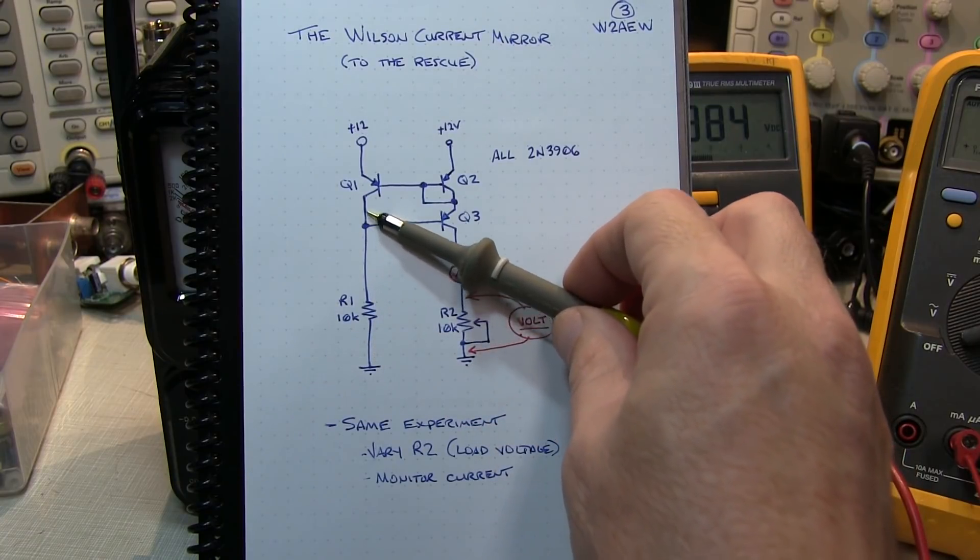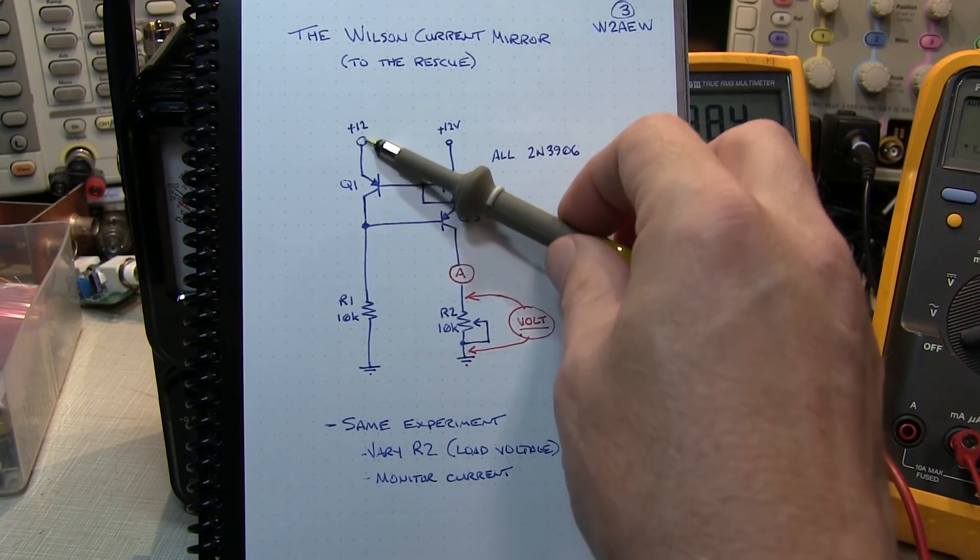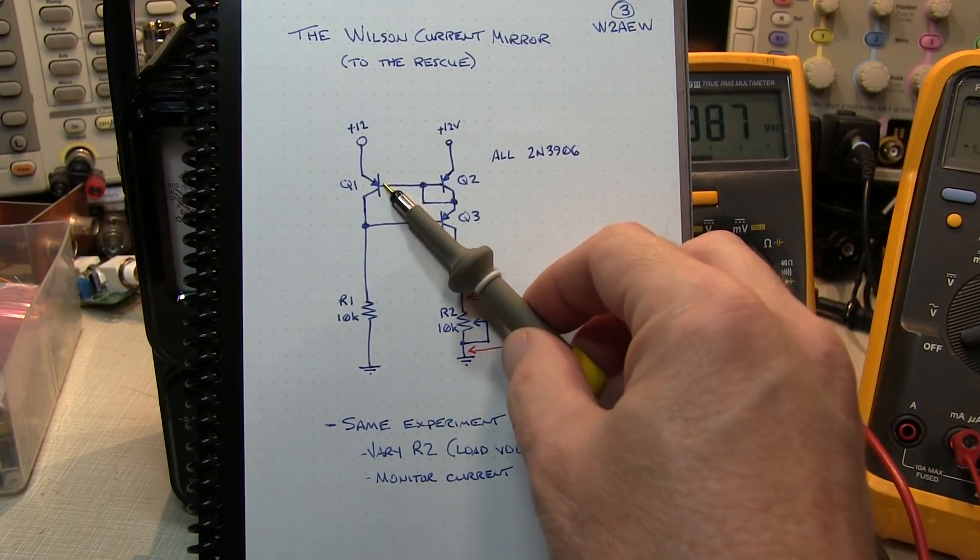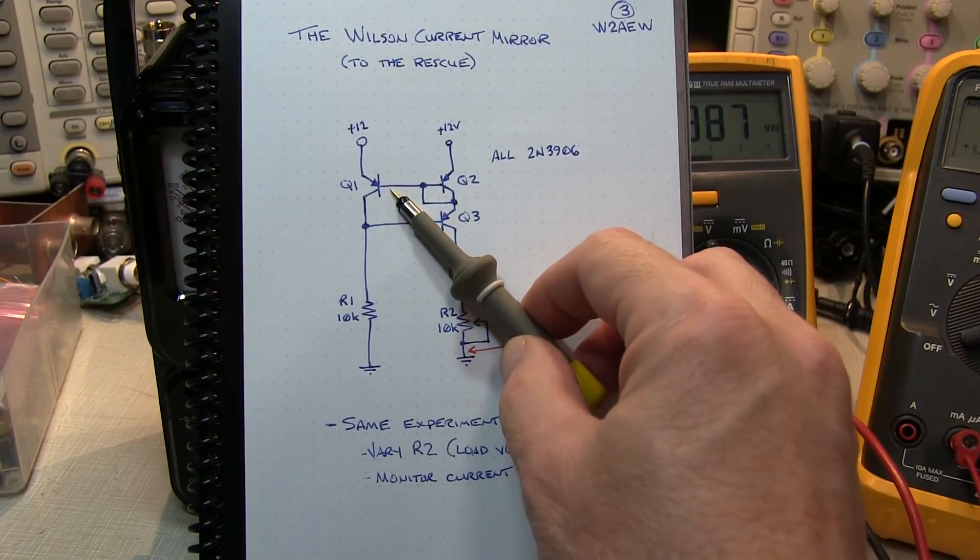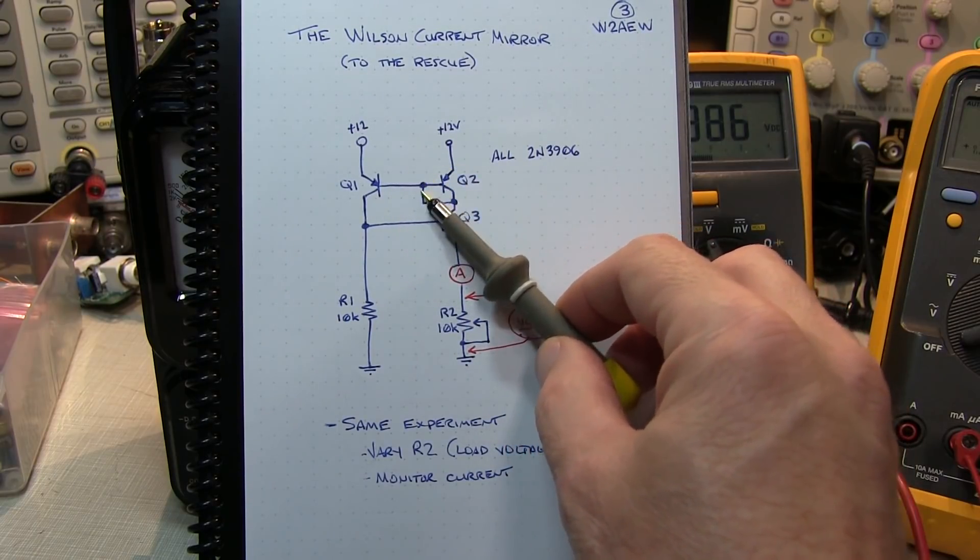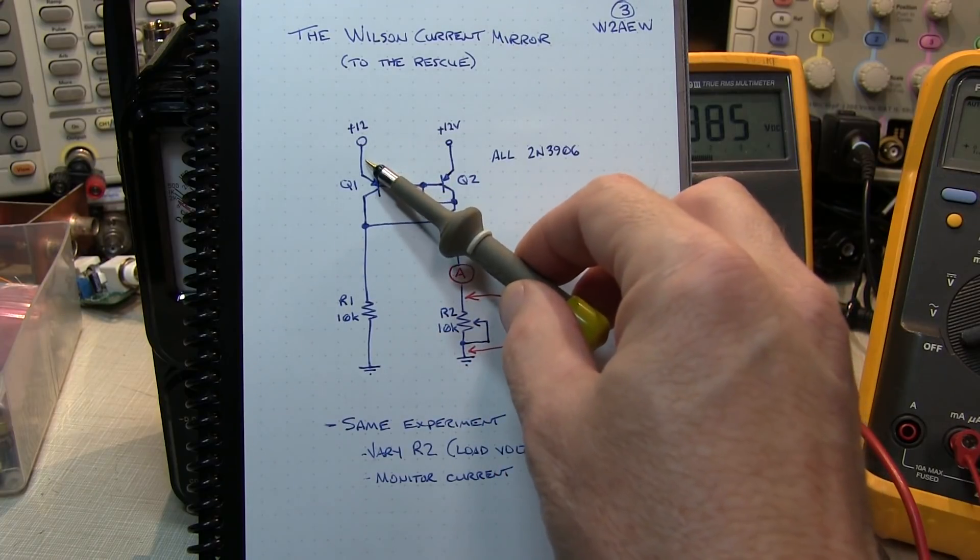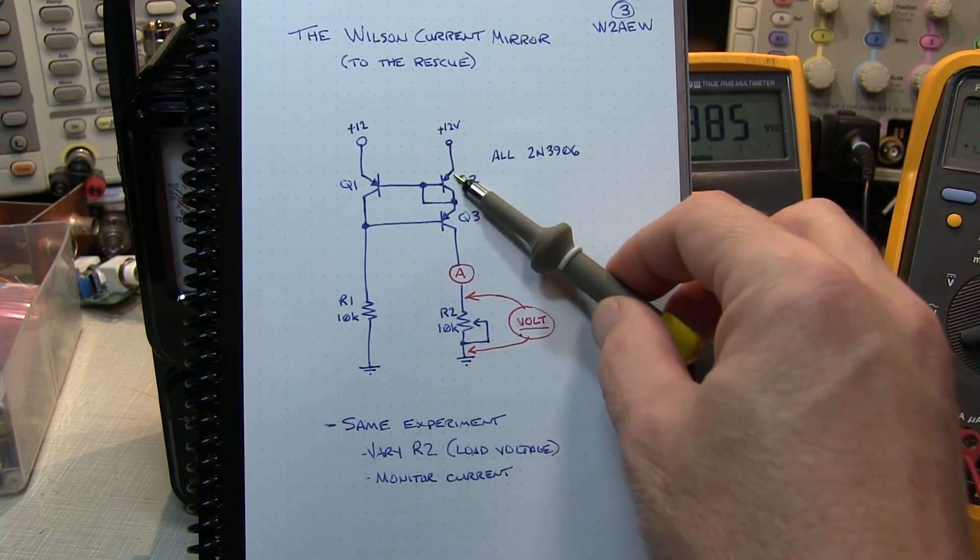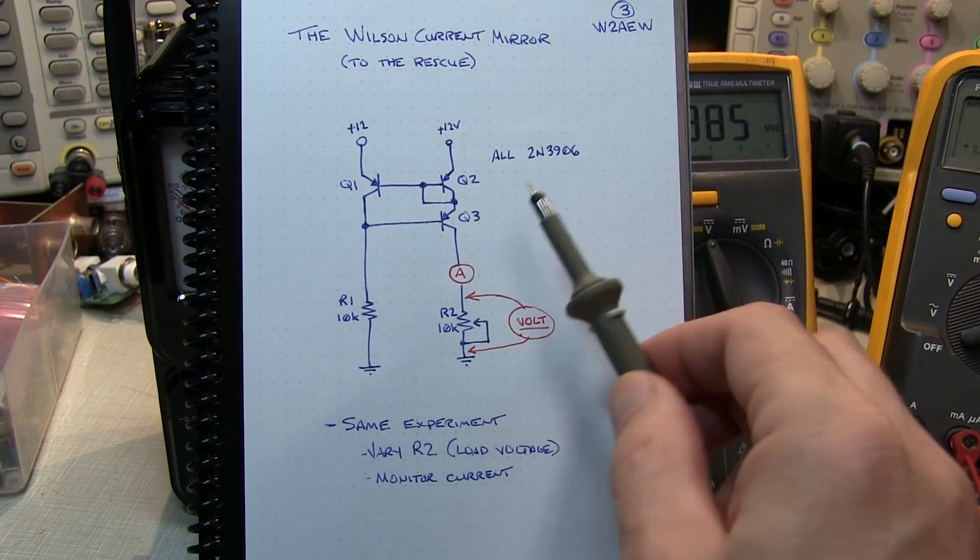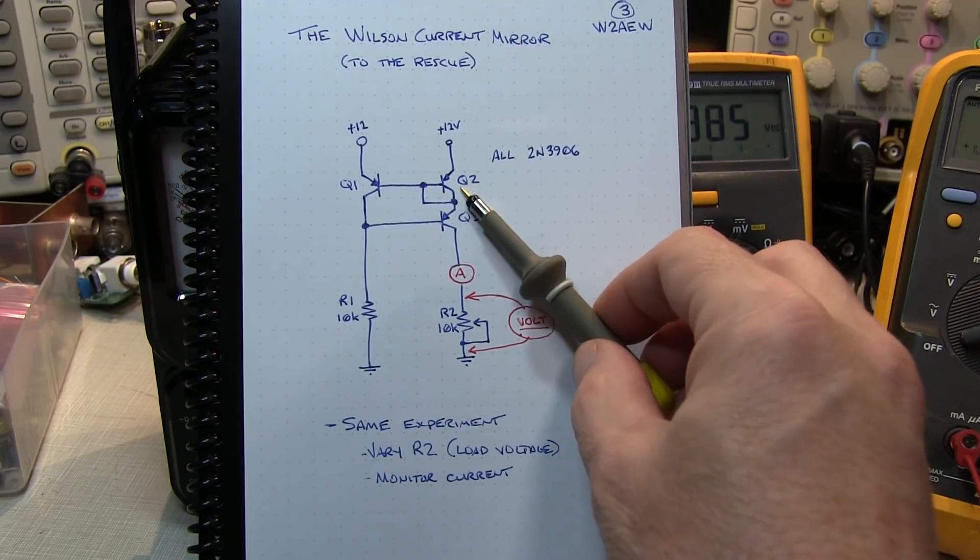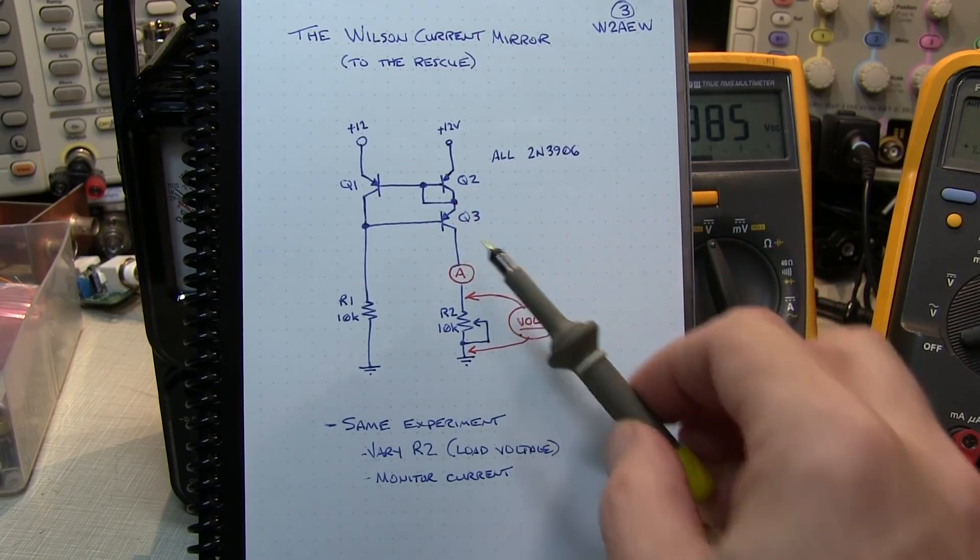With that constant current in Q1, setting up a base emitter voltage on Q1, that base emitter voltage is going to be the same on Q2 because they're connected to the same points. So now I'm going to have the same collector current flowing in Q2 as I am in Q1. If we ignore the base currents, that same current going through Q2 is also going to flow through Q3.